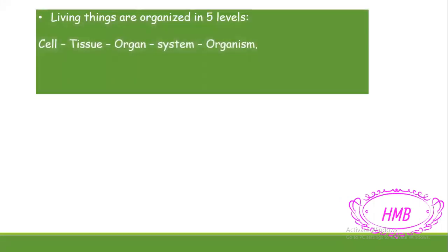Let's start by remembering information from the previous videos and lessons. First, we studied that all living things, whether they are animals, humans, or plants, are organized in five levels. If you remember, and you can go back to the video on levels of organization of a human body, we have five levels to have a complete living thing or a complete human body.